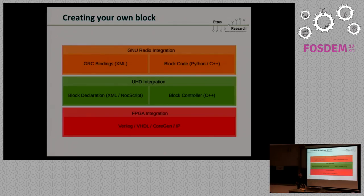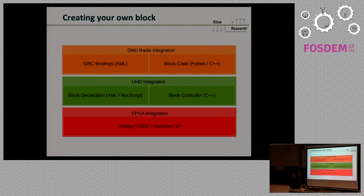The NOC ID is something really important — it is the only way your computer, your driver, your GNU Radio will know which block you're using. That is the identifier. Then you have your block controller: if you have more than one input, if you have something going on with the driver, you're going to have to write a C++ file. Usually you don't — it just works with the descriptor because you have something called NOC script. That is a way of instantiating small functions in your descriptor so you don't have to write a block controller. Then you want GNU Radio blocks that look nice — then you go a step further.